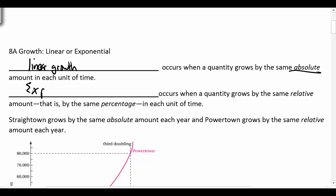The second type of growth we're going to refer to is called exponential growth. And this occurs when the quantity grows by the same relative amount or same percentage in each unit of time.